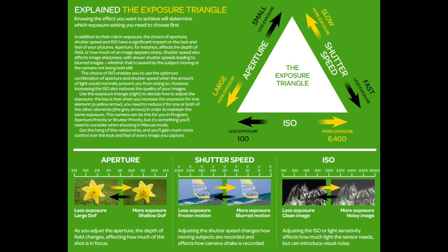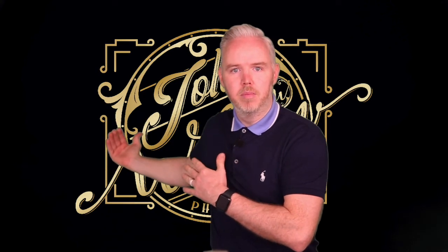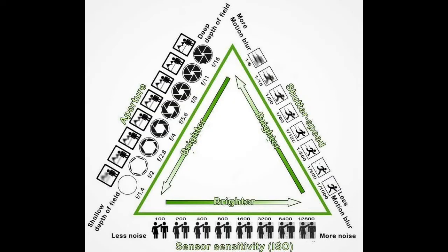Starting with aperture: a large aperture means a small f-number and a shallow depth of field, while a small aperture means a large f-number with a deeper depth of field. Basically, the lower the f-stop number, the larger the iris of the camera opens up. So if I'm here and there's an item behind me, the shallower the depth of field, the blurrier that item behind me is going to be.